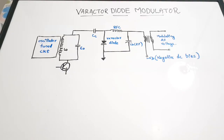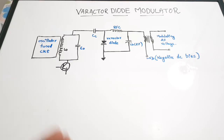In today's video we are going to discuss about angle modulators. We will be discussing about two angle modulators: one is based on a varactor diode and one is a transistor based angle modulator. Angle modulation includes frequency modulation and phase modulation as two categories. The modulators used to produce either FM or PM are called angle modulators.